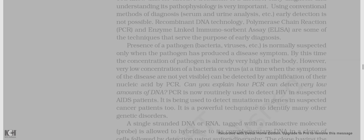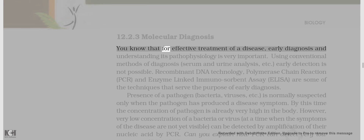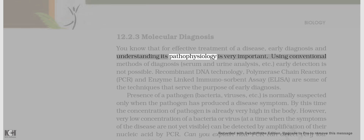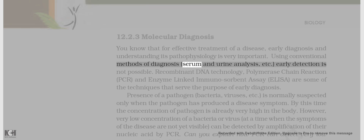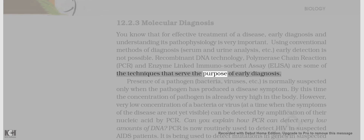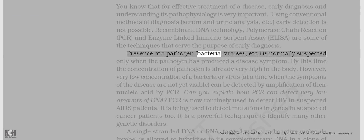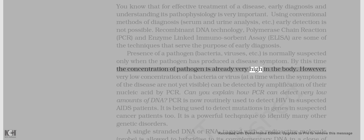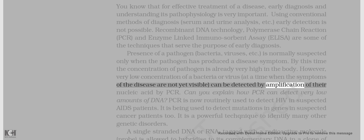12.2.3 Molecular Diagnosis. For effective treatment of a disease, early diagnosis and understanding its pathophysiology is very important. Using conventional methods of diagnosis — serum and urine analysis etc. — early detection is not possible. Recombinant DNA technology, polymerase chain reaction, PCR, and enzyme-linked immunosorbent assay, ELISA, are some of the techniques that serve the purpose of early diagnosis. Presence of a pathogen — bacteria, viruses etc. — is normally suspected only when the pathogen has produced a disease symptom. By this time the concentration of pathogen is already very high in the body. However, very low concentration of a bacteria or virus, at a time when the symptoms of the disease are not yet visible, can be detected by amplification of their nucleic acid by PCR.